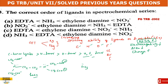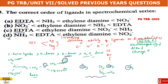Ammine has nitrogen as the donor atom. Ethylene diamine also has 2 nitrogen donor atoms. NO₂⁻ donates through nitrogen or oxygen depending on linkage. EDTA donates through both nitrogen and oxygen. Since nitrogen donors are stronger than oxygen donors, the order in the spectrochemical series places nitrogen-only donors above mixed nitrogen-oxygen donors. The answer is C. The charge factor: increasing charge increases splitting ability.